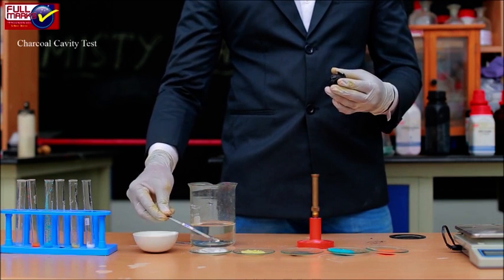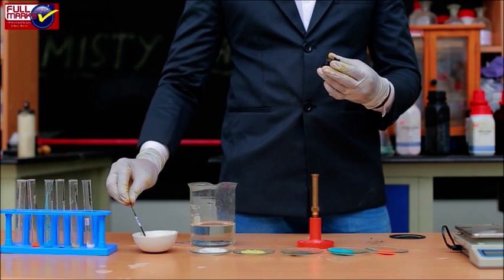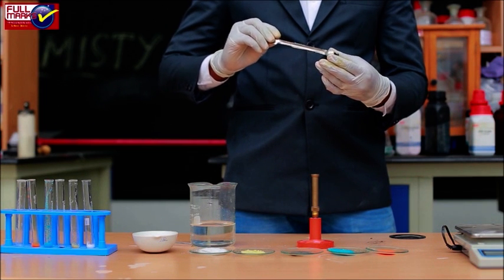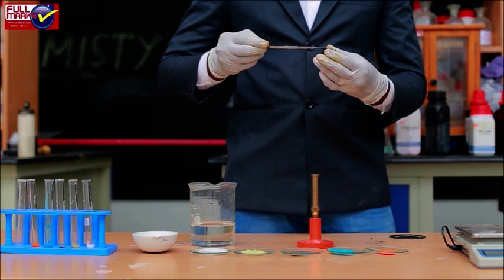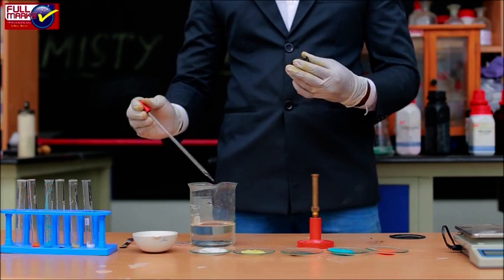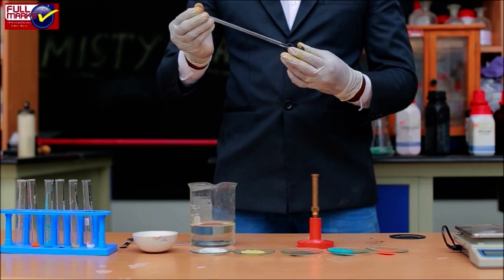Charcoal cavity test: This test is divided into two parts, which are reduction test and cobalt nitrate test. This test is based on the premise that when metallic carbonates are heated in a charcoal cavity, they decompose to give corresponding oxides. The oxide is obtained as colored incrustation or residue in the charcoal cavity.